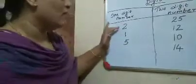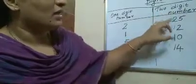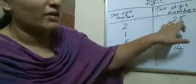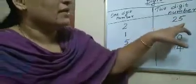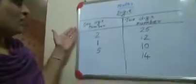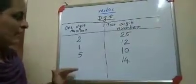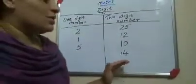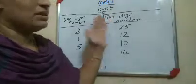Now here. One-digit numbers go from 1 to 9. Two-digit numbers go from 10 to 99. So 1-digit numbers are 1 to 9, and 2-digit numbers are 10 to 99.